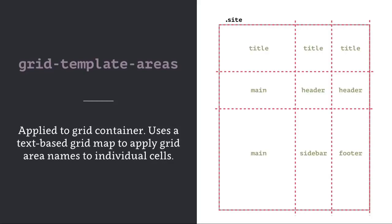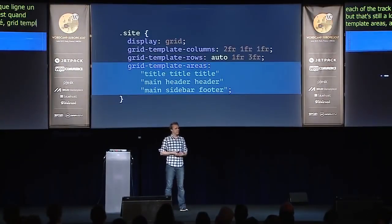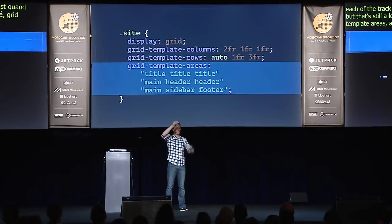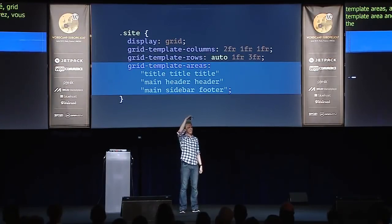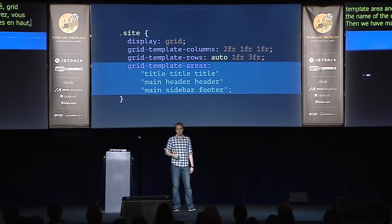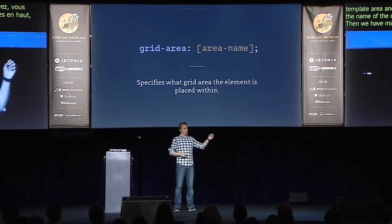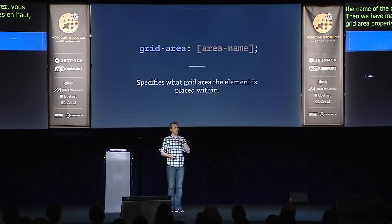So we have this new property called grid-template-areas, and it's nuts — it's almost like ASCII. You declare grid-template-areas and then you write out each of the cells in your grid and say what is the name of this cell. For instance, here the three cells at the top are title, title, title. Then we have main, header, header and main, sidebar, footer. Then you use the grid-area property on individual child items, and you just declare the name of the area you want that element to appear in.